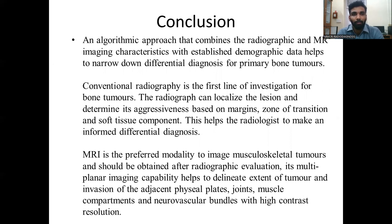Conclusion. An algorithmic approach combining radiographic and MR imaging characteristics with established demographic data helps narrow the differential diagnosis of primary bone tumors. Conventional radiography is the first line of investigation, allowing localization of the lesion and assessment of aggressiveness based on margins, zone of transition, and soft tissue component. MRI is the preferred modality to image the musculoskeletal system and should be obtained after radiographic evaluation. Its multiplanar imaging capability helps delineate the extent of tumor and invasion of adjacent physeal plates, joints, muscle compartments, and neurovascular bundles with high contrast resolution.